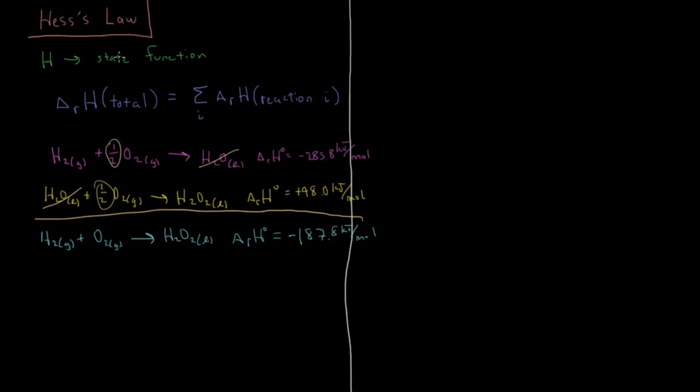So since enthalpy is a state function, we started and ended at the same place. So if we start and ended at the same place, the enthalpy change has to be zero for that total process. So the enthalpy of a reverse reaction has to be the opposite of the enthalpy of a forward reaction.